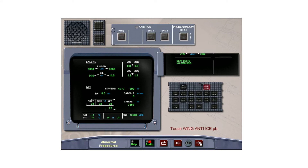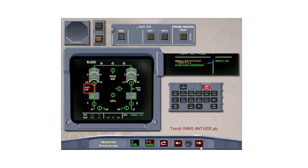Touch the wing anti-ice push-button to turn it on. The wing anti-ice system fault indicates the left anti-ice valve has not opened when the switch was selected on. ECAM actions are to turn off the wing anti-ice and avoid icing conditions. Touch the wing anti-ice switch to turn it off.